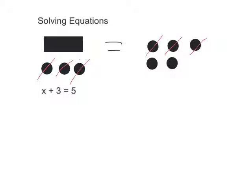Now how would I show that in the equation? That would mean that I would have to subtract 3. Scratching out, crossing out, and subtracting are the same thing. So I would subtract 3 from both sides, which would mean x equals 2.